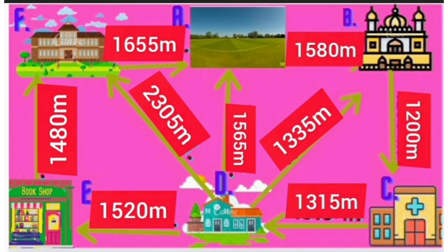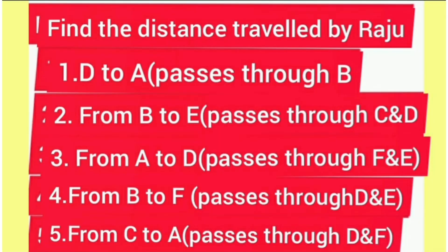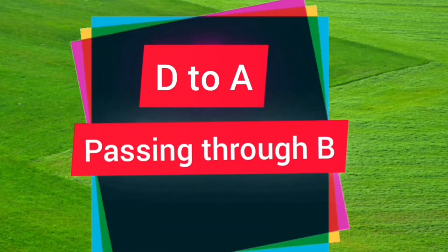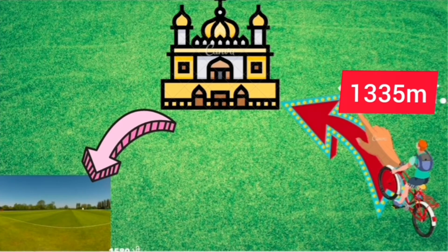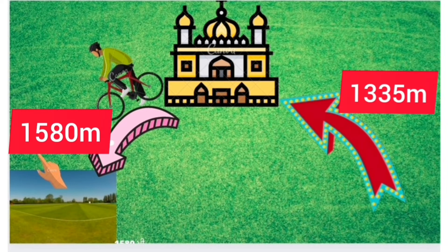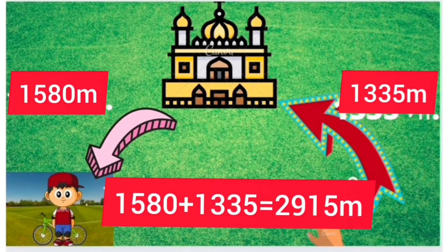Let us see where Raju goes daily and how much distance he covers. He firstly starts from D to A, passing through B. At D is Raju's house and at A is the playground, passing through B, which is a religious place. The distance between Raju's house and the religious place is 1335 meters, and the distance between the religious place and the playground is 1580 meters. The total distance covered by Raju is 1580 plus 1335, which equals 2915 meters.